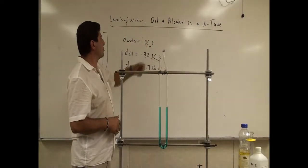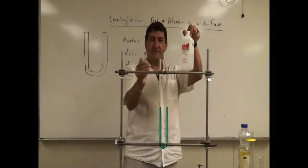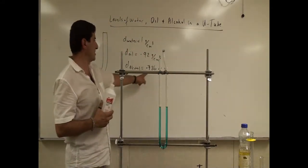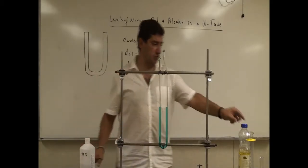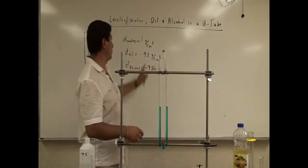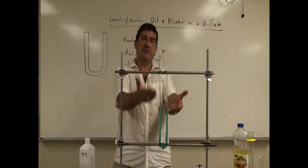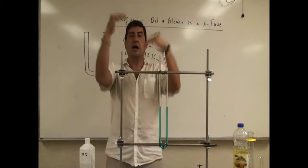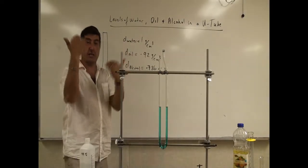The density of water is 1 gram per cubic centimeter. I'm going to take some alcohol and put it on one side of these tubes. The density of isopropyl alcohol is 0.786 gram per cubic centimeter. I'm also going to take some vegetable oil — regular vegetable oil — and its density is 0.92 gram per cubic centimeter. The question is, if I put different amounts on either side, how will the levels of the water, oil, and alcohol adjust themselves?